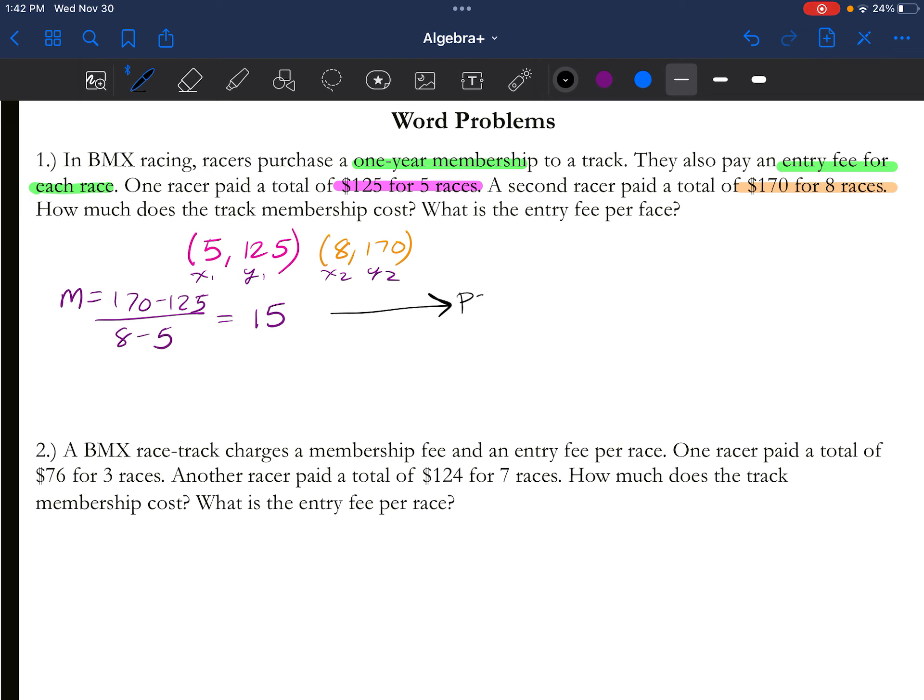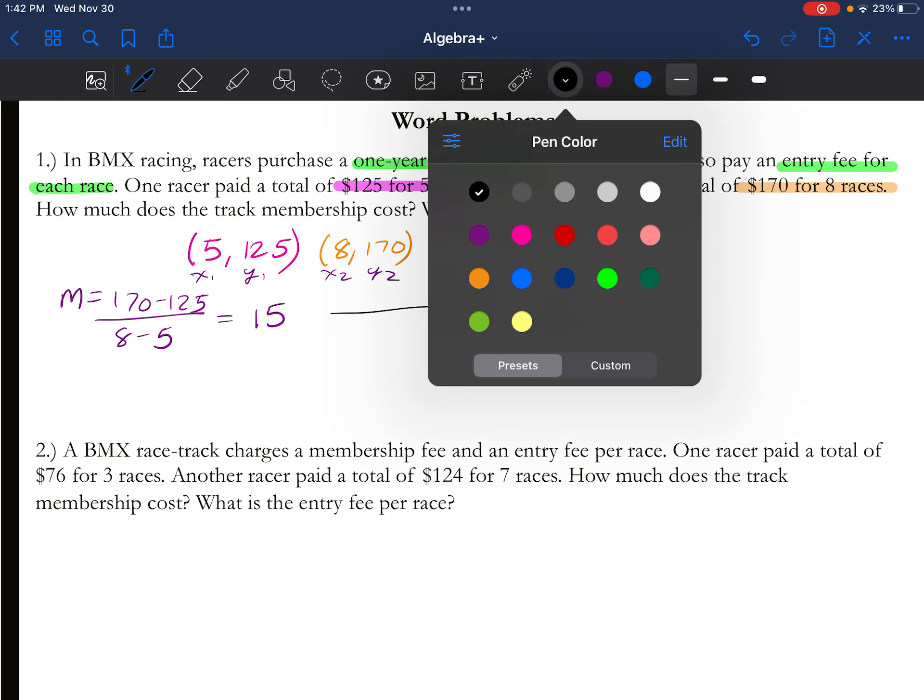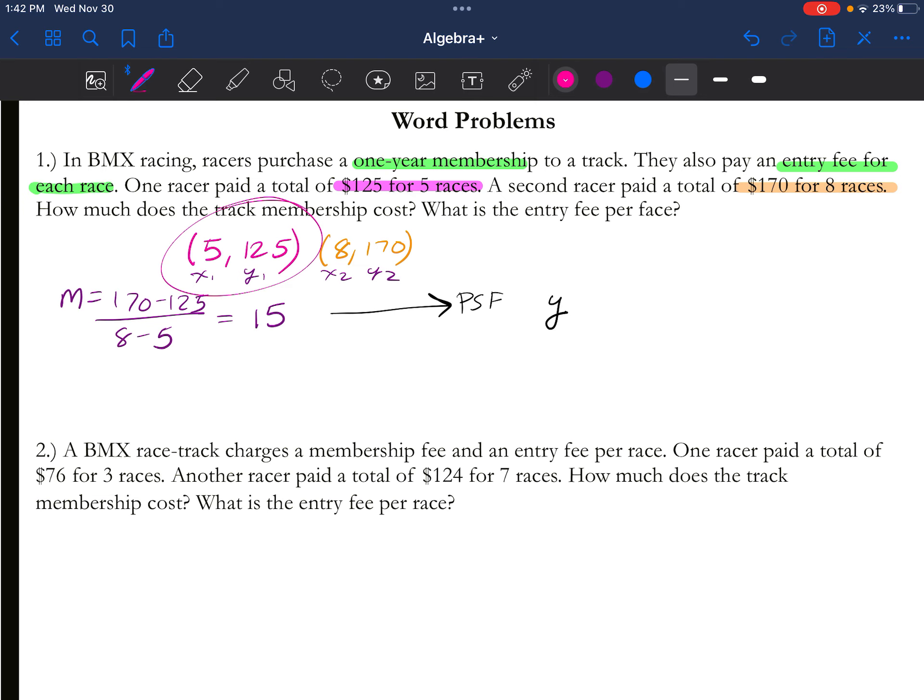Okay, so now I have a slope and two points. I can put this in point-slope form because I have the information to do that. So I get y, I'm gonna use this pink one, the first one, y minus 125 equals 15 times (x minus 5). I'm gonna distribute and then I'm gonna add the 125.